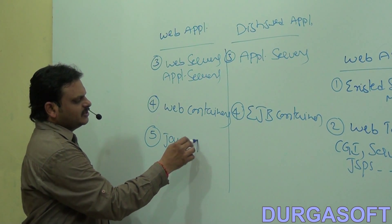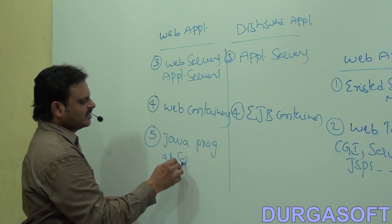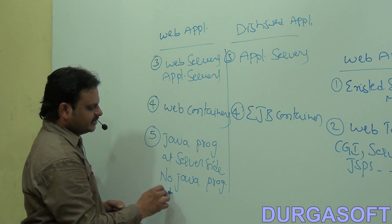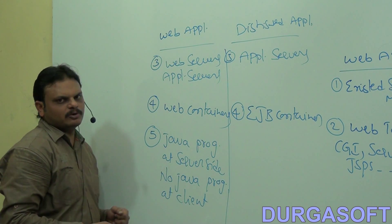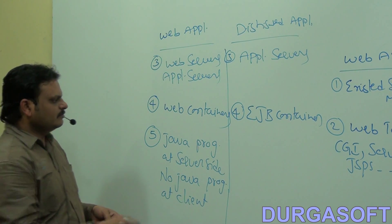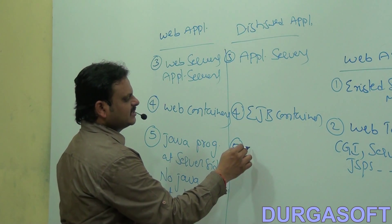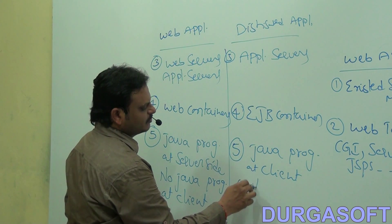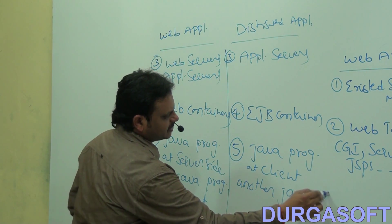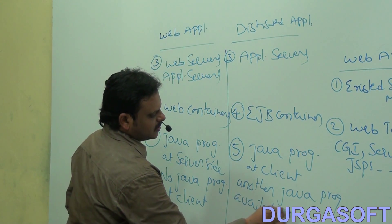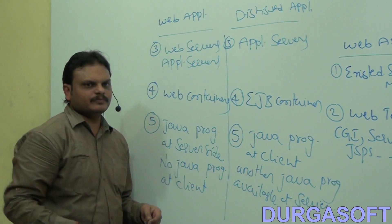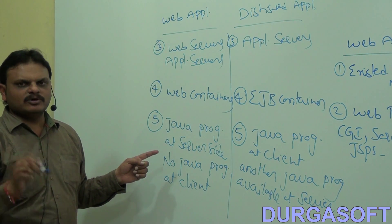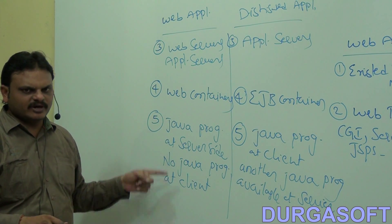Another difference: in the case of web applications, a Java program is available only at the server side — there is no Java program at the client side. But in the case of distributed applications, a separate Java program is available at the client side as well as another Java program at the server side.